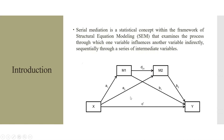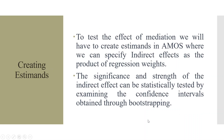X is affecting Y through M2 — so X affects M2, M2 affects Y. X is also affecting Y through the mediator M1 — so X affects M1, M1 affects Y. And finally, X affects M1, M1 affects M2, M2 affects Y. This is known as serial mediation.